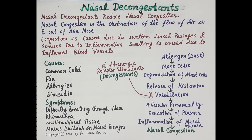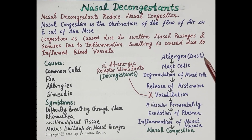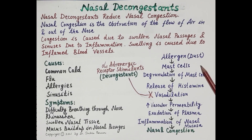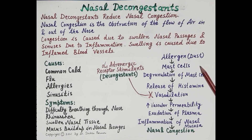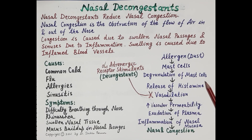Let's understand the process of nasal congestion with the help of a flow diagram. Allergens like dust particles, smoke, pollen, and even cold air are inhaled and reach the nasal mucosa. In the nasal mucosa, these allergens stimulate the mast cells, causing degranulation of mast cells and release of histamine.